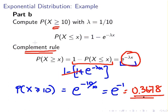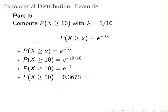So the answer for part (b) is P(X ≥ 10) ≈ 0.3678. To verify: 10 multiplied by 1/10 equals 1, and we apply the negative sign, giving e^(−1) ≈ 0.3678.